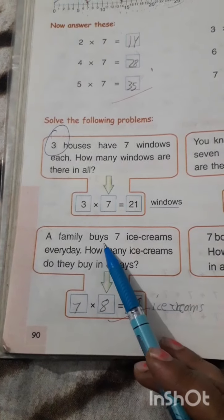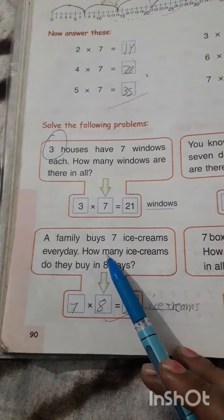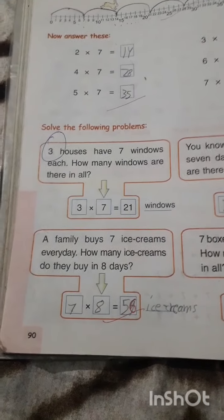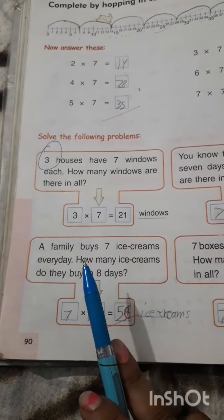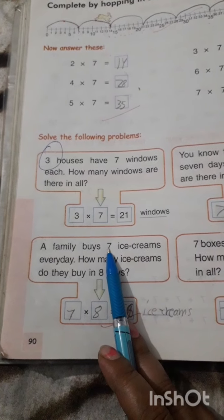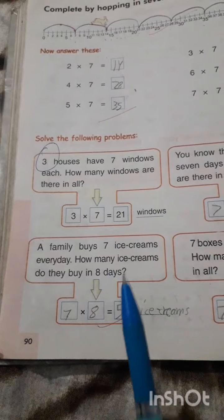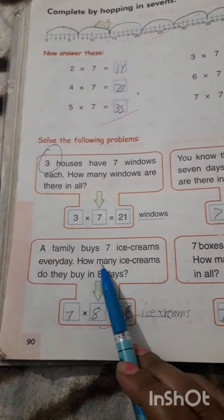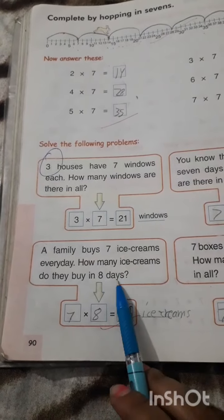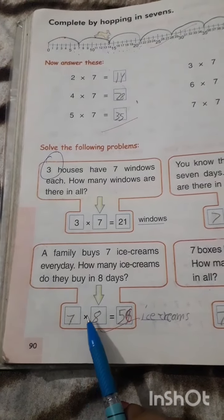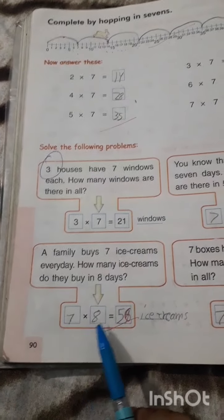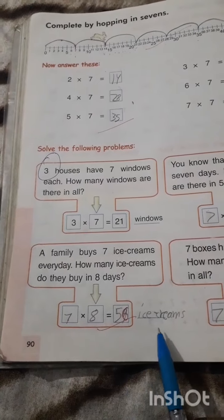A family buys 7 ice creams every day. How many ice creams do they buy in 8 days? Family buys ice cream in 1 day means every day, 7 ice cream. How many ice creams they will buy in 8 days? 7 multiply 8. 7 times 8. 7 8s are 56. 56 ice creams.